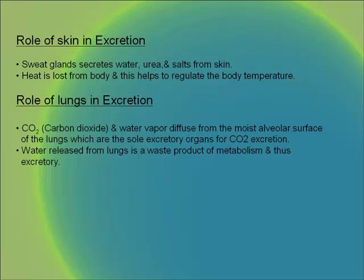Sweat glands in the skin secrete water, urea and salts, and heat is lost from the body, helping to regulate body temperature. The lungs excrete carbon dioxide and water vapor, which diffuse from the moist alveolar surface; the lungs are the sole excretory organs for carbon dioxide. Water released from the lungs is a waste product of metabolism and is thus excretory.